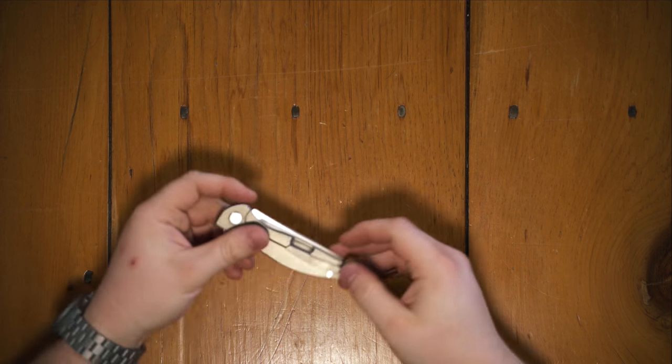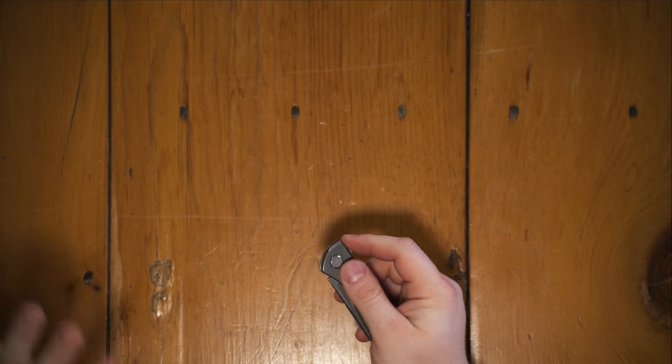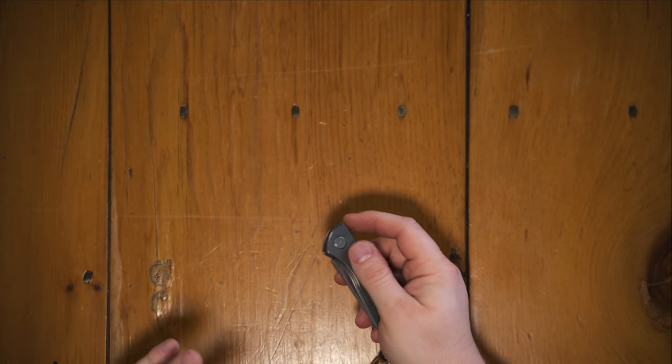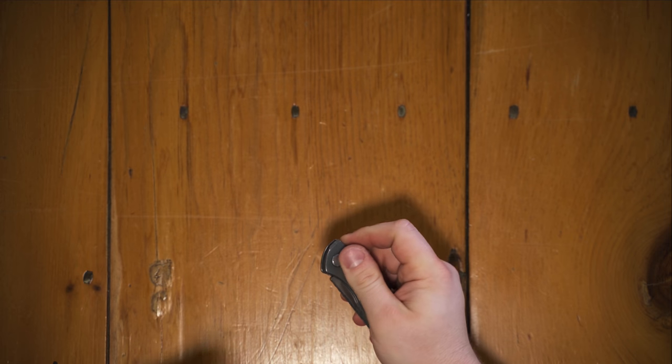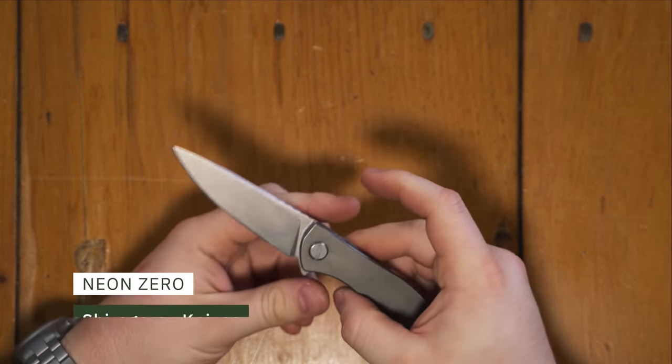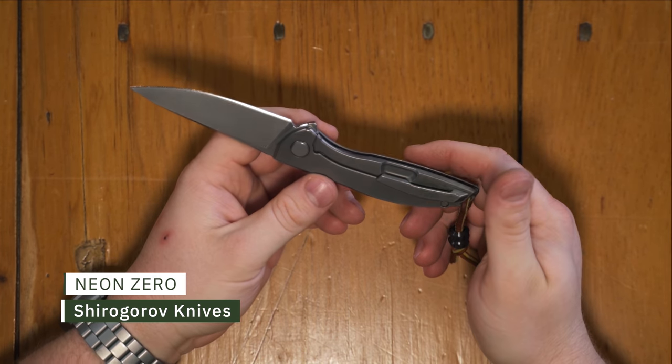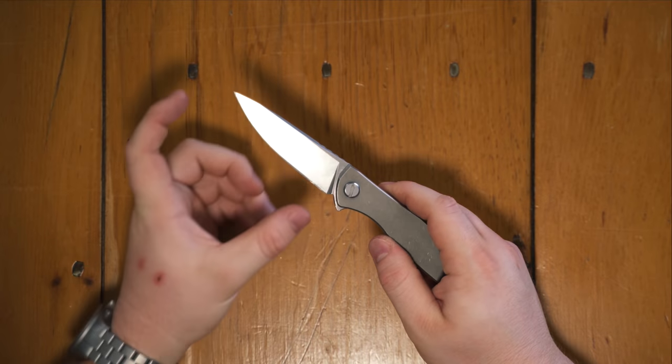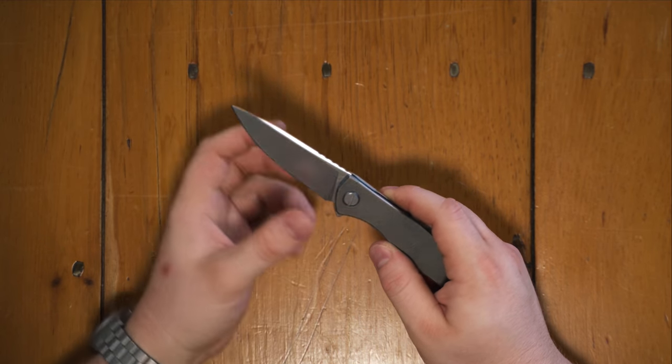The next knife is, I would say my most carried knife as of late. There are some things with this knife that I wish I hadn't done, but I did them. But it doesn't really make me like it any less. This is the Shirogorov Neon Zero, the smaller Shirogorov knife. It's a 3.375 inch blade length with an M390 drop point flat grind.